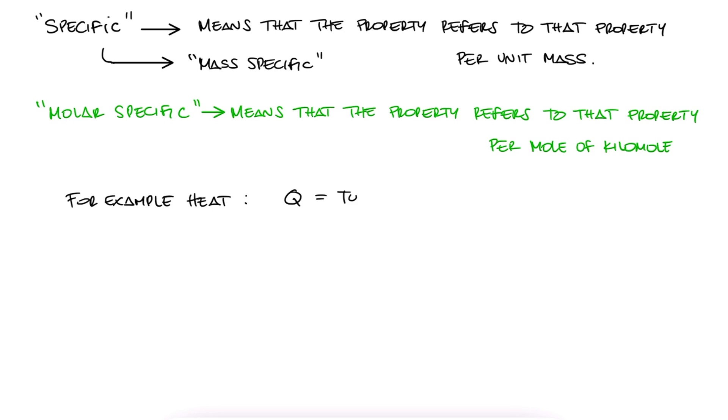Capital Q refers to the total heat in the system, it's a total quantity going in or out, usually in joules or kilojoules, in metric units of course, and lowercase q, on the other hand, would be the amount of heat per unit mass, for example, kilojoules per kilogram.